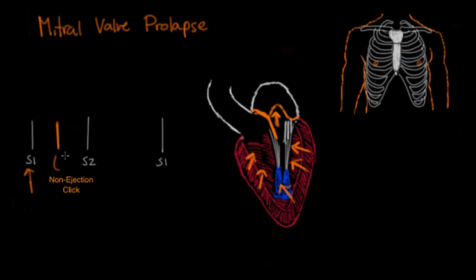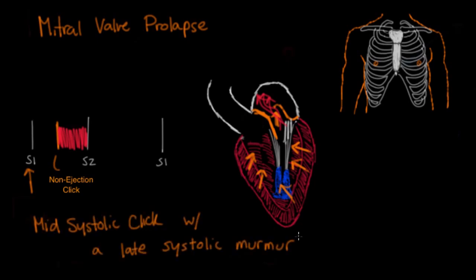Mitral valve prolapse is also associated with mitral regurgitation. If the valve billows up, there are problems closing completely, allowing blood flow back through. If that's the case, after the click you get the murmur of mitral regurgitation. Some textbooks show this as a flat murmur, others as a crescendo murmur — we won't dwell on its shape. What's important is the click itself, because a mid-systolic click is virtually diagnostic for mitral valve prolapse. Overall, this is described as a mid-systolic click with a late systolic murmur, heard best at the apex or mitral area.